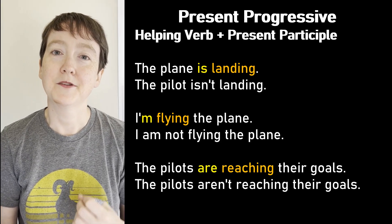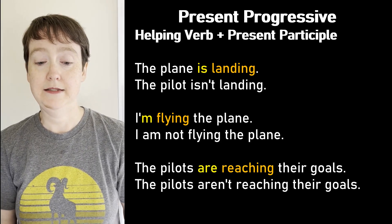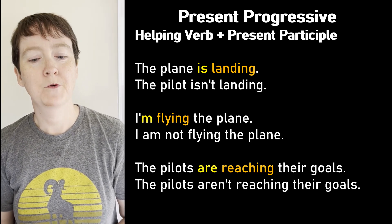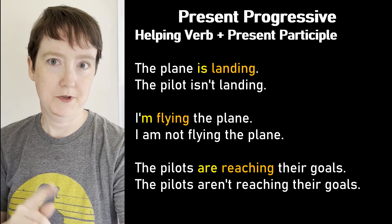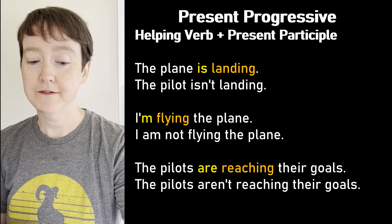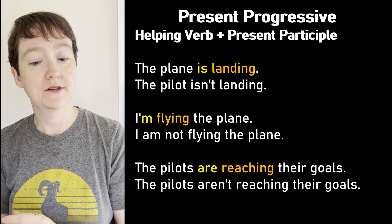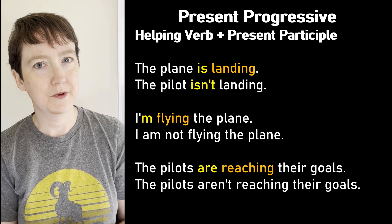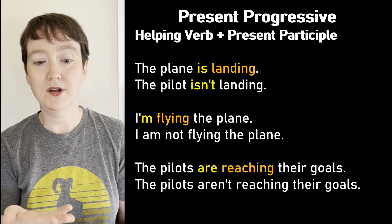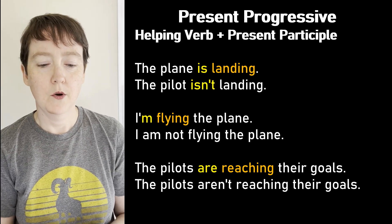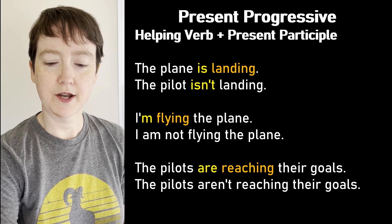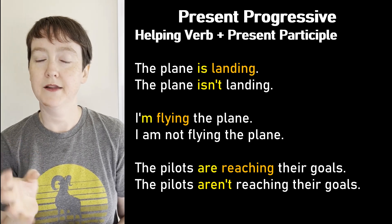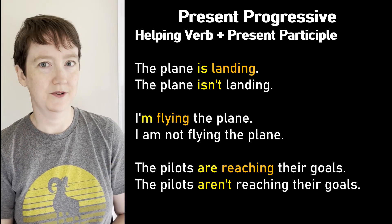Now look at the negative sentences. Where do we put the negative word 'not'? We put it after the helping verb be. Look at that first sentence — can you see the 'not'? It is contracted with the helping verb: 'is not' becomes 'isn't.' What is the other negative contraction? In the third example: 'The pilots aren't reaching their goals.'